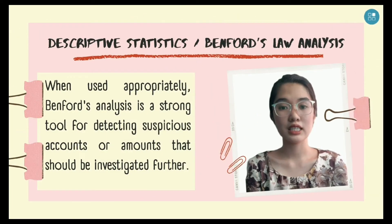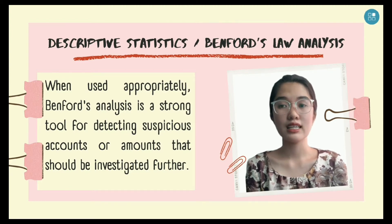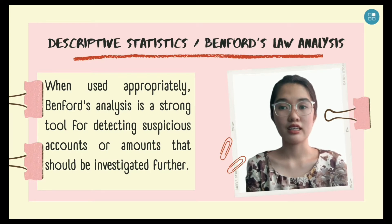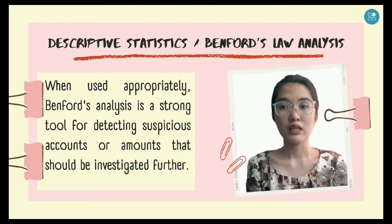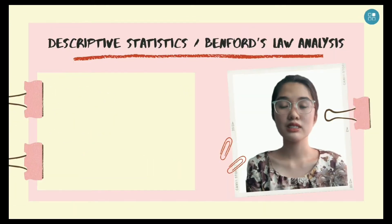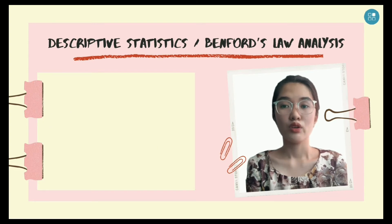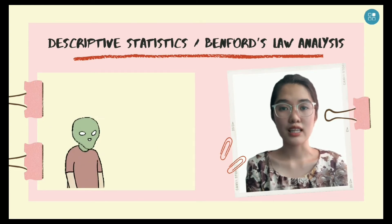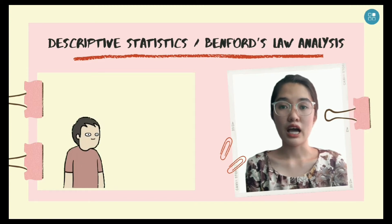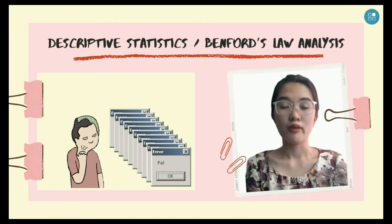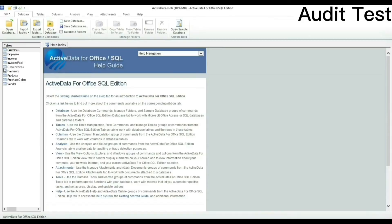The second audit test is descriptive statistics, or Benford's Law analysis. When used appropriately, Benford's analysis is a strong tool for detecting suspicious accounts or amounts that should be investigated further. Benford's Law is a useful generic test that may be used to check for excessive duplications that could indicate fraud in most data sets. Descriptive statistics provide maximum, minimum, and average amounts, and other statistics. With Benford's, you will be able to tell whether someone has faked data or identify errors given the frequency of appearance. Select the Invoice Paid table, go to Analysis, and then Statistics.